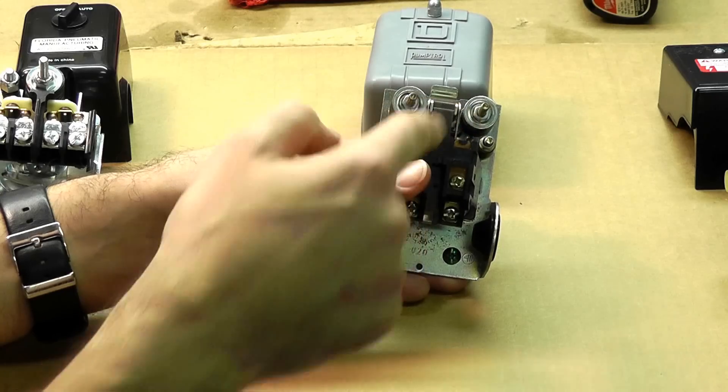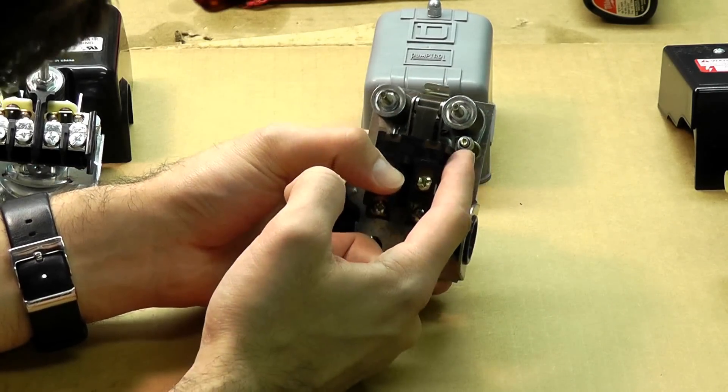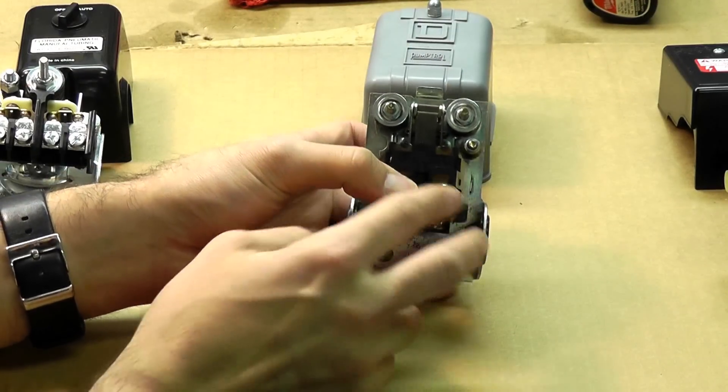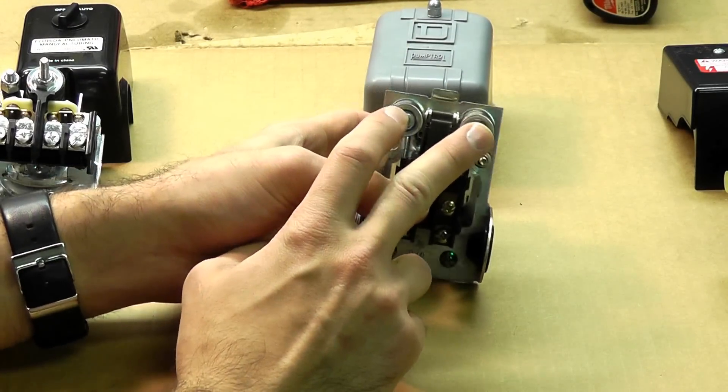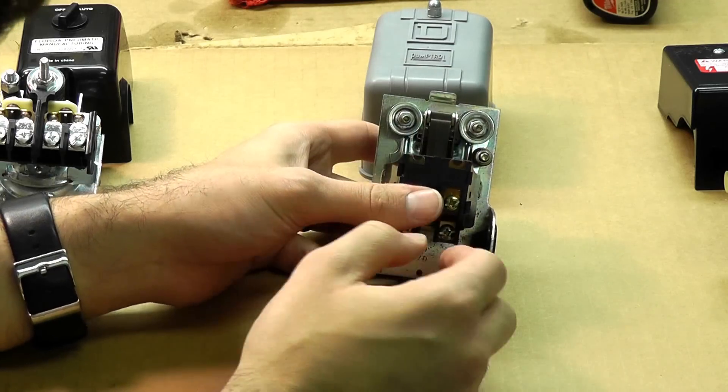You'll notice two posts here surrounded by thick springs, and of course the two posts have small nuts, adjustment nuts on them. And another smaller one right here with a nylon nut and a smaller spring. These are the cut-in pressure adjustments, or basically the main pressure adjustments.